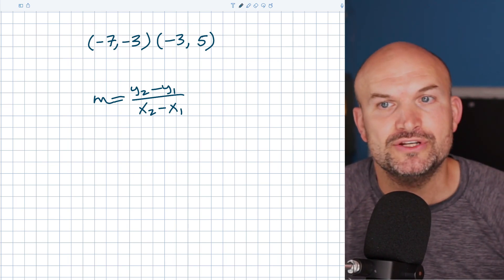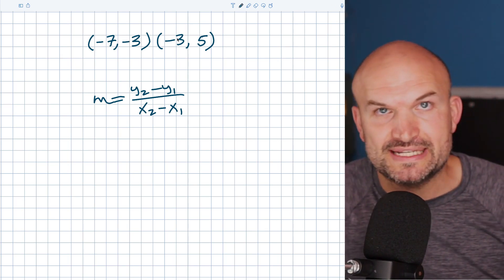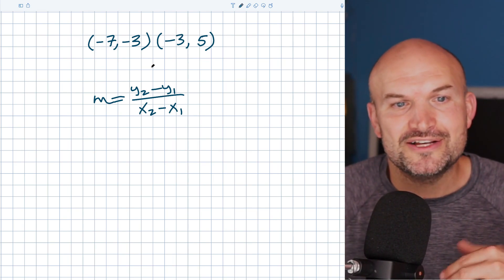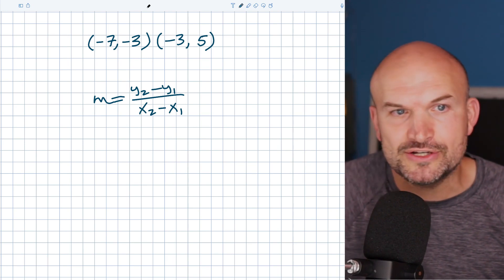So I do have a tip for you that you can use to overcome making those mistakes. And the tip is pretty simple. It's just using your parentheses. So I want to find the slope. Notice how this is X1, Y1, X2, Y2.